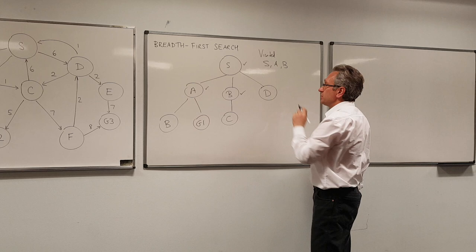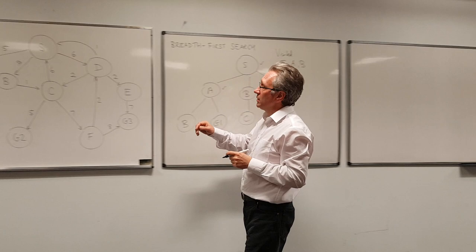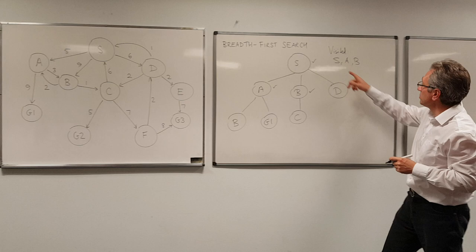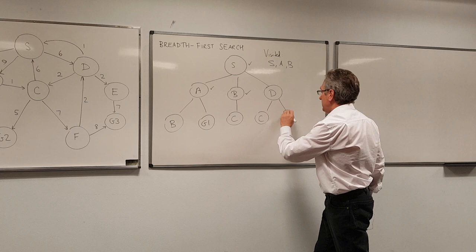And we go on to node D. It's not the goal state, so therefore we expand it. We can go to C, E, and to S. But S is already on the visited list. So therefore, we just add C and E here, and we add D to the visited list.